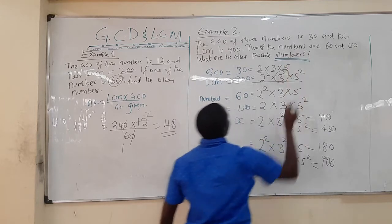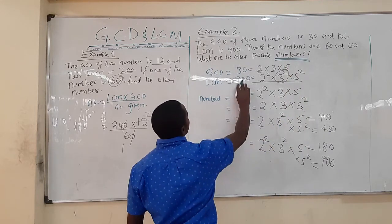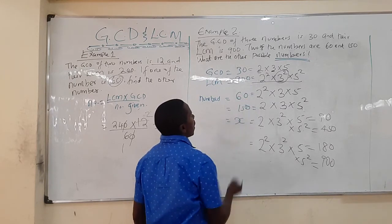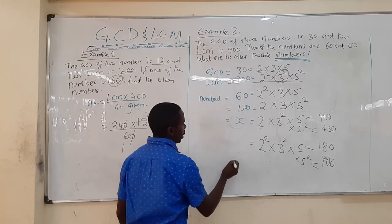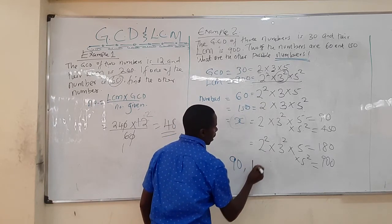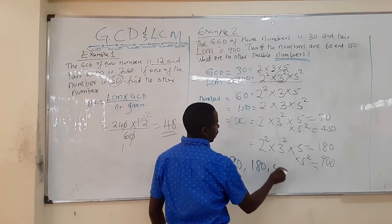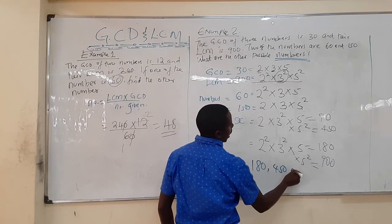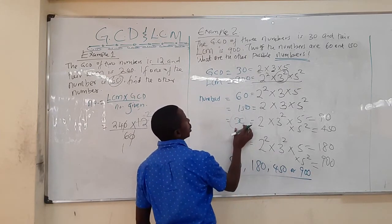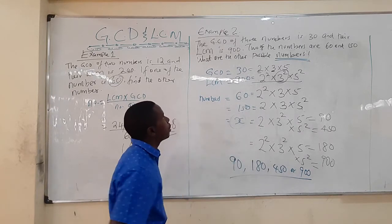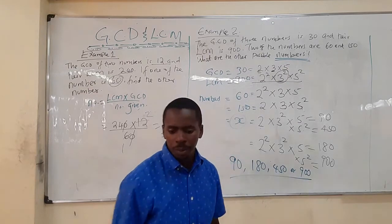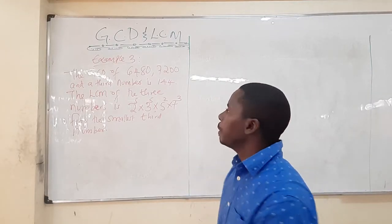So we have four combinations of numbers that can fit the question. The third number can either be 90, 180, 450, or 900 — any of these four numbers will satisfy the conditions that the GCD is 30 and the LCM is 900 with the two given numbers 60 and 150. That is how you answer this kind of question.